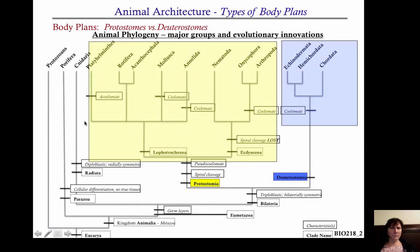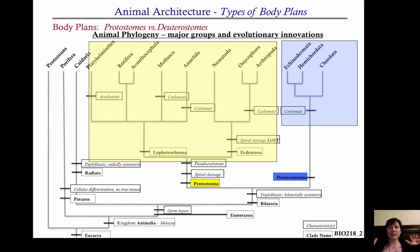This tree I showed you in class is the roadmap for the whole semester. In yellow are all of the organisms that exhibit spiral cleavage and are referred to as protostomes. In blue are all the organisms referred to as deuterostomes. This completely and totally corresponds to all the development I've been showing you.